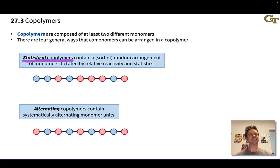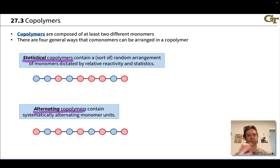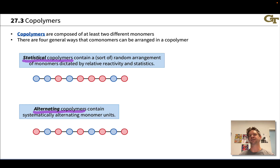Kind of the exact opposite of that is the perfectly ordered situation in an alternating copolymer, where we have alternating monomer units — red, blue, red, blue, and so on. That kind of regularity usually requires some clever synthetic strategies.